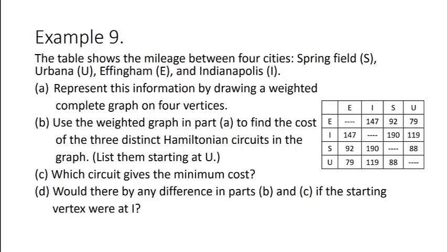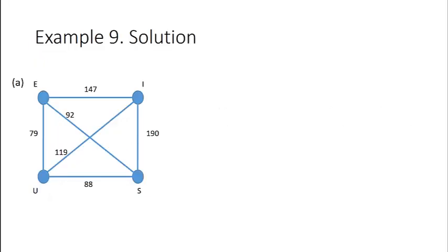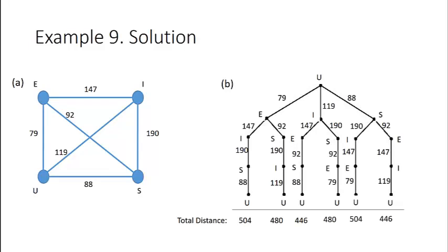Starting with here is what a possible weighted graph might look like. And what our method of trees diagram is going to look like with the total distances produced. We see that the minimum cost route is U, I, E, S, U with a cost of 446.